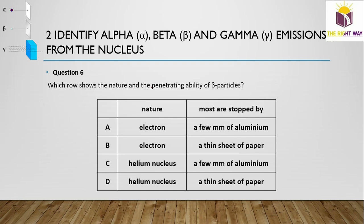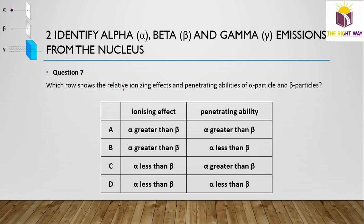Question 6: Which row shows the nature and penetrating ability of beta particles? Beta particles are electrons, and they are stopped by a few millimeters of aluminum, not by a thin sheet of paper. So option A is correct. Question 7: For ionizing effect and penetrating ability of alpha vs. beta — alpha particles are more ionizing than beta, and beta particles are more penetrating than alpha. So option B is correct.